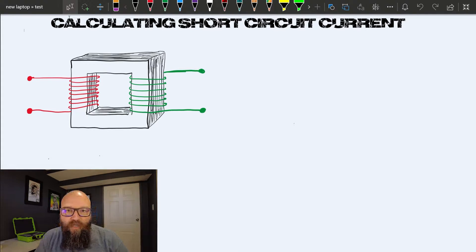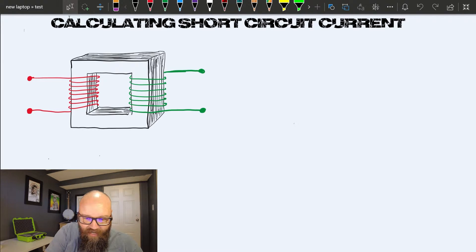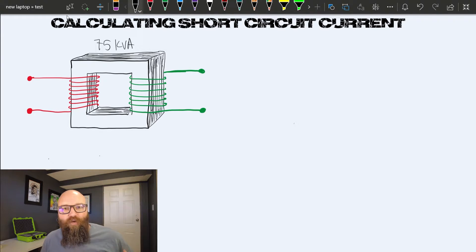I've got a basic transformer drawn here. This is just a single phase. We've got our primary winding in red and our secondary winding in green. I'm going to give you the basic numbers needed to perform a short circuit calculation. First off, this is a 75 kVA transformer. What we know about transformer theory is KVA in equals KVA out.